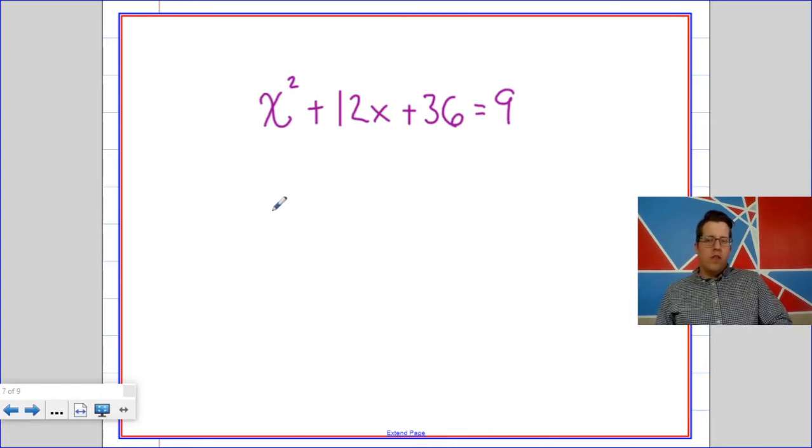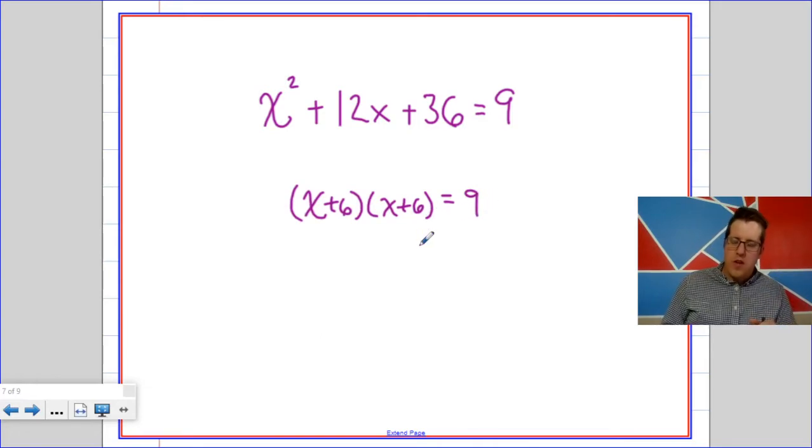Say I had this equation. Now, normally we would never factor something that doesn't equal 0. But, let's just factor the left side. Doesn't it factor to x plus 6 times x plus 6?